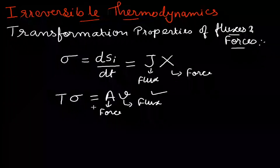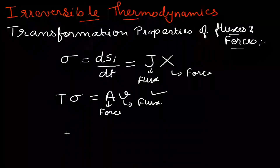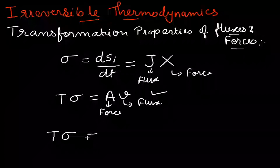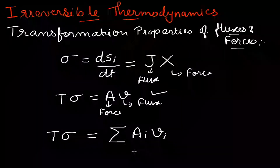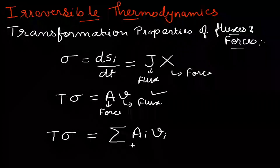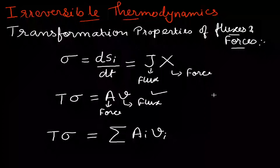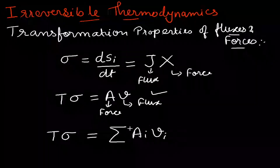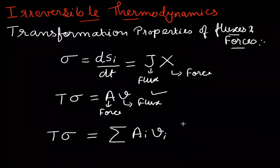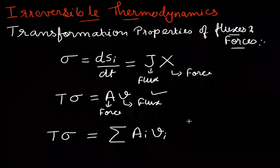For a single reaction the entropy production is tσ = A·μ; for more than one reaction it is given as tσ = Σ Ai·μi. To show the transformation properties, we will consider two different cases and show that for both cases the fluxes and forces are the same. The first case is a consecutive reaction, and the second case involves two independent reactions.